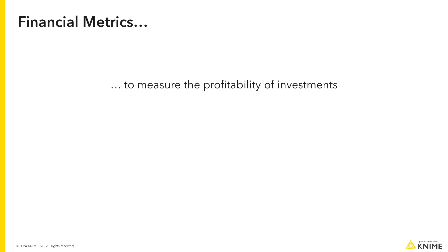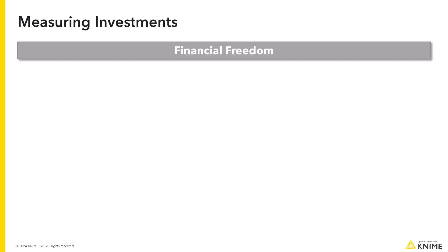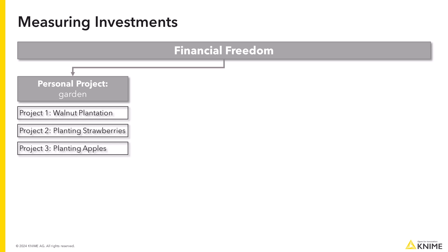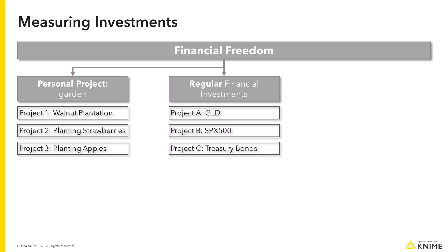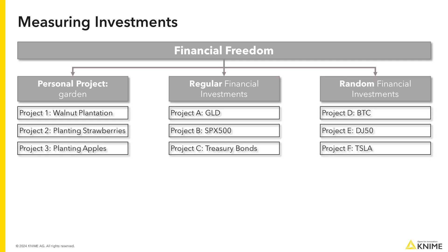Today, we talk about financial metrics that every FP&A analyst must know to measure the profitability of investments. If we want to obtain financial freedom, and the same obviously applies in the business context, we can invest in different areas like personal investments on individual projects that we create, regular financial investments where we invest every month a regular sum of money, or random financial investments, which are usually riskier, non-regular investments.